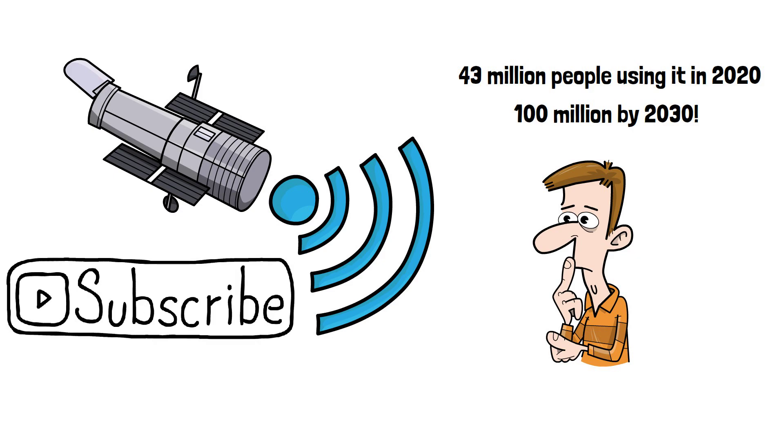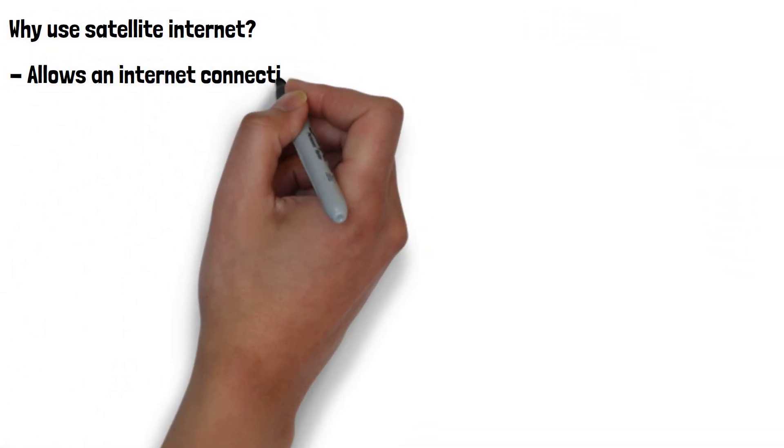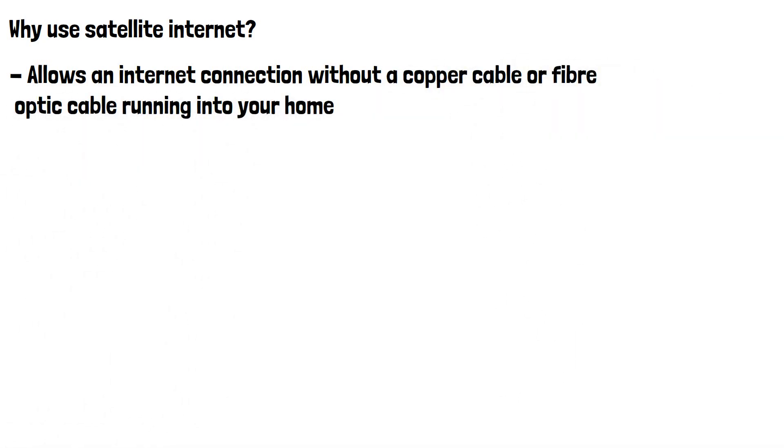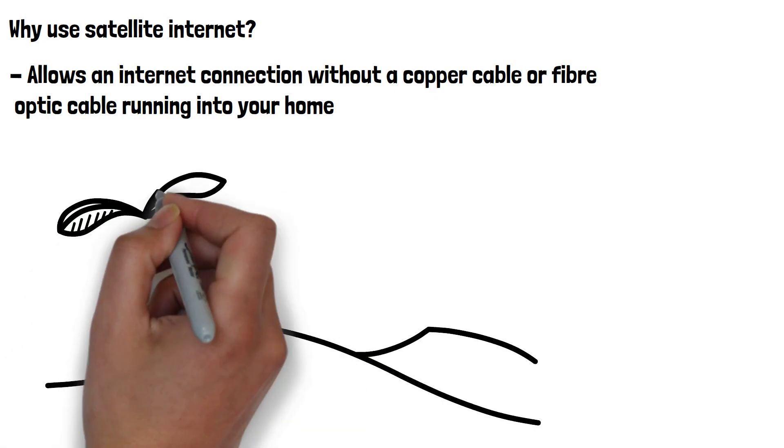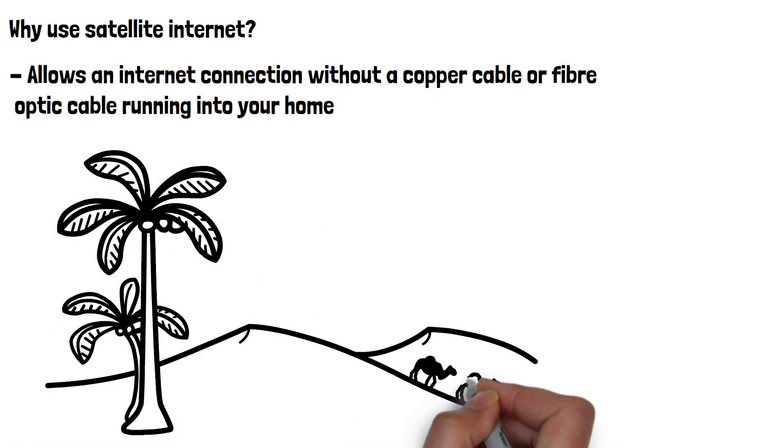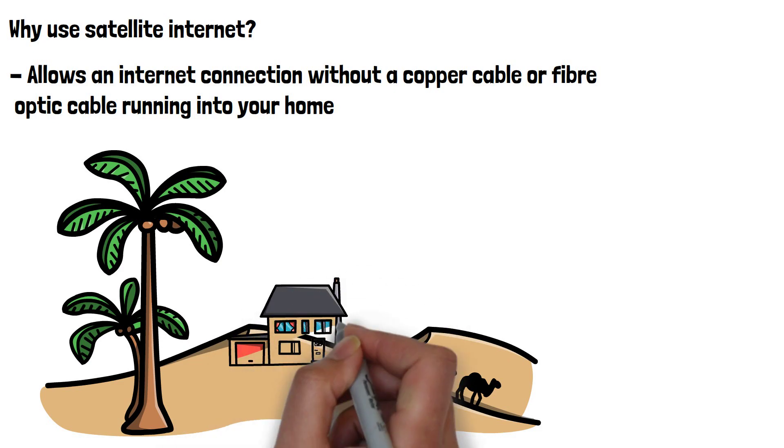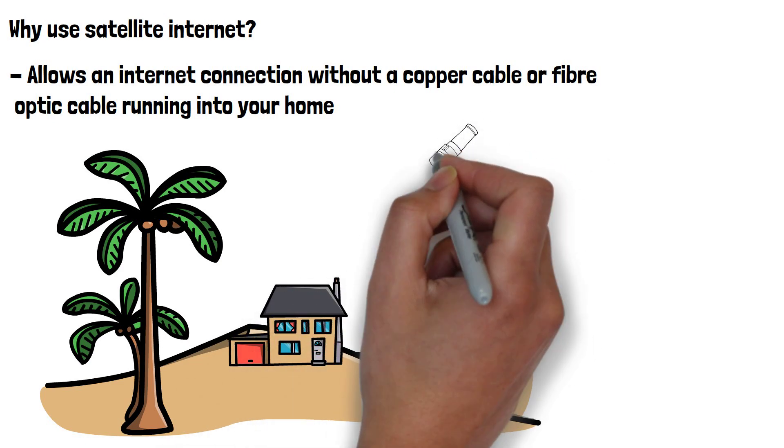Let's start with why you'd want to use satellite internet. The main reason is it allows an internet connection without a copper cable or fiber optic cable running into your home. If you live in a rural or very sparsely populated area, an internet service provider is unlikely to spend the money on infrastructure to run a cable to your house. With satellite internet, this isn't a problem.